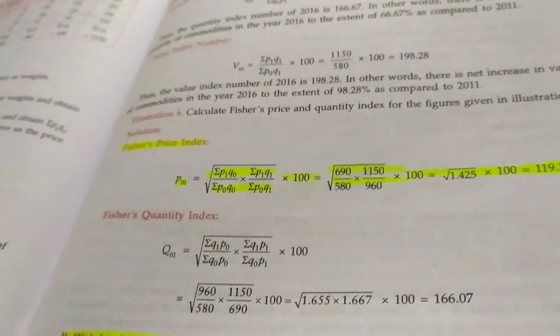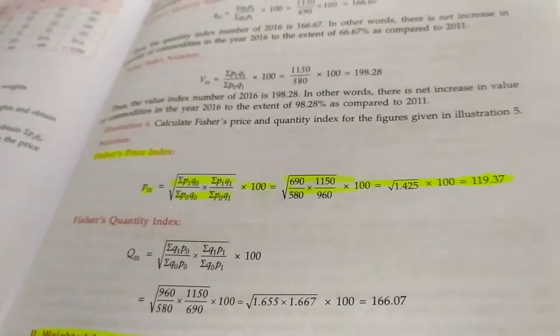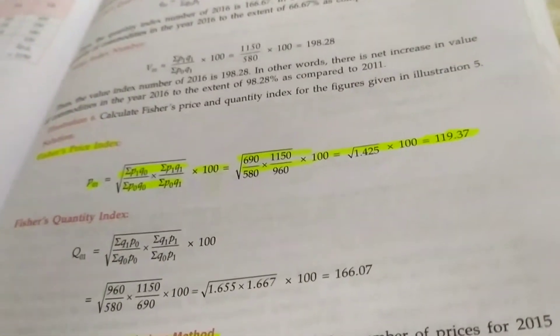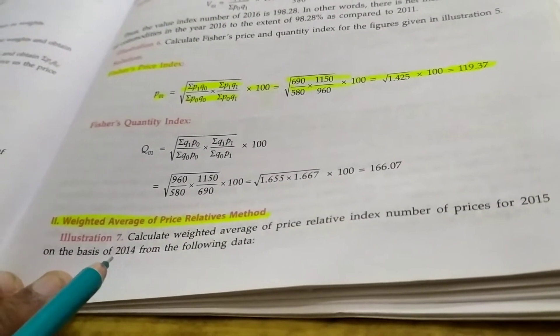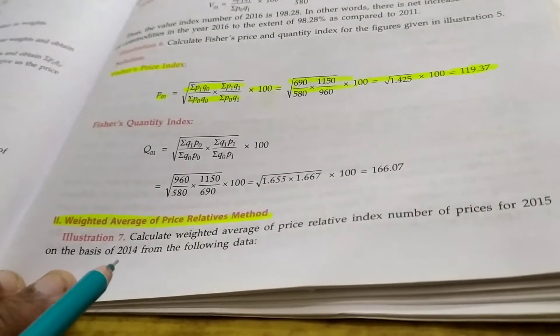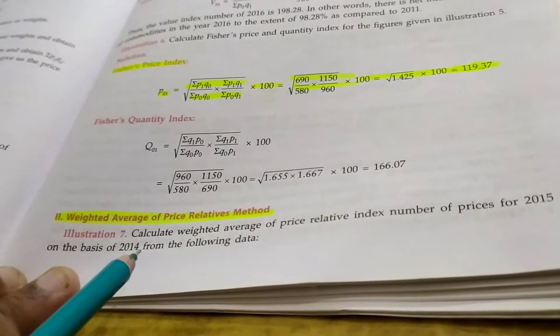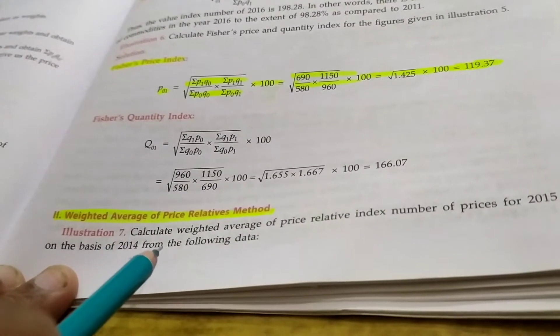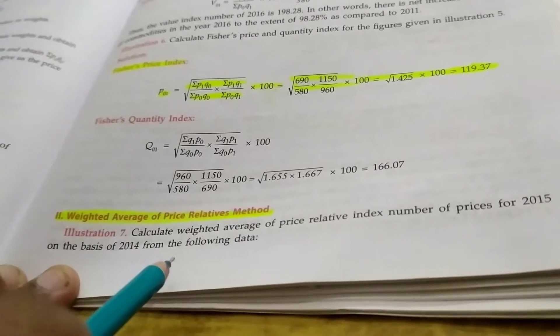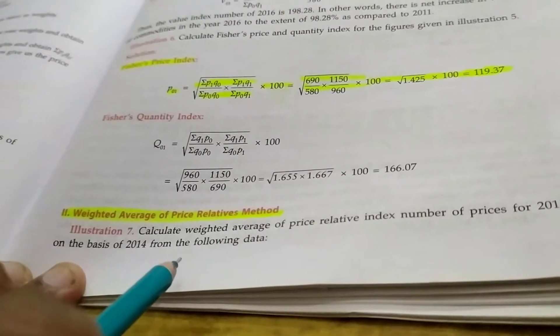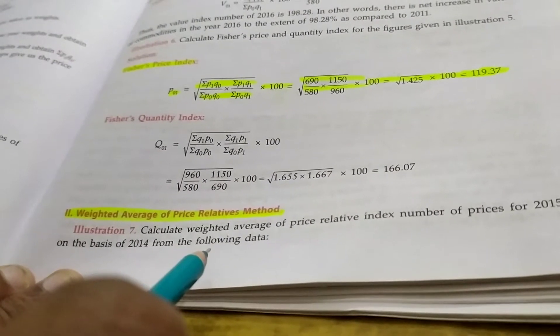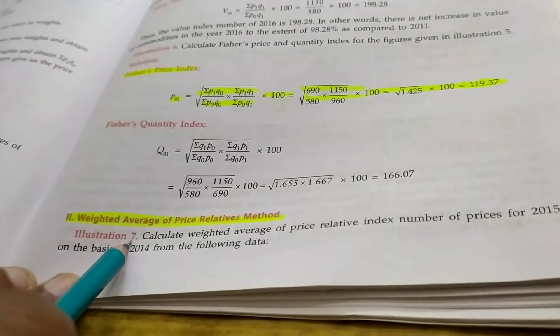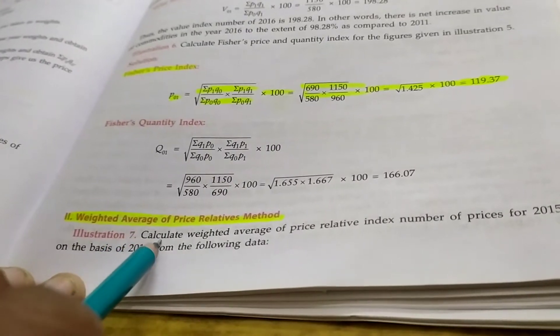Dear students, while calculating weighted average of price relative method we have formula P01 equal to sigma PV upon sigma V, where P equal to P1 upon P0 into 100, and V equal to P0 Q0, or V equal to weights.